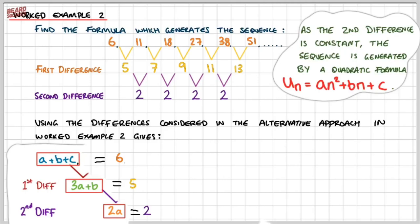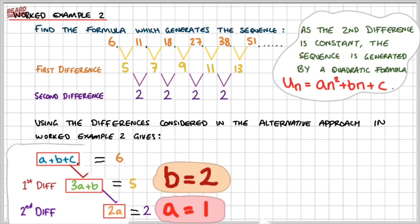All you need to do now is solve these three equations to find the values of a, b, and c. Starting at the bottom because we have one variable: 2a equals 2, so a equals 1. Now substituting a into the second equation: 3 times 1 is 3, so 3 plus b must equal 5, therefore b equals 2. Now substituting a and b into the third equation: 1 plus 2 is 3, and 3 plus c must equal 6, so c equals 3. So now that we've worked out our constants a, b, and c, we can substitute these numbers into the standard form.